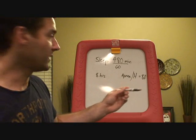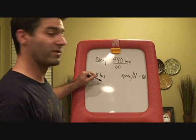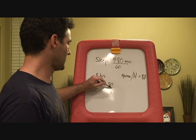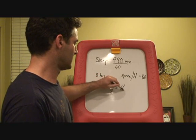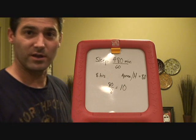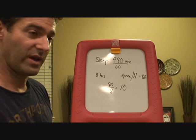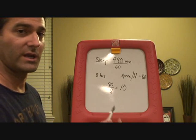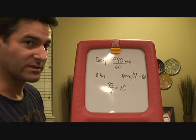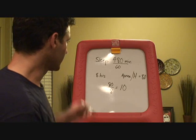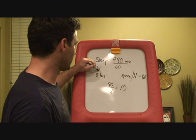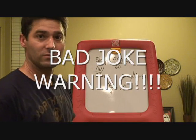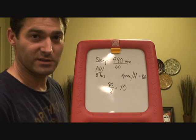So what you do is take 80 and divide it by eight, which gives you 10. And obviously that makes sense because if you have 10 per hour and you slept eight hours, that should equal 80 — so it all adds up. That is the AHI, the apnea-hypopnea index.